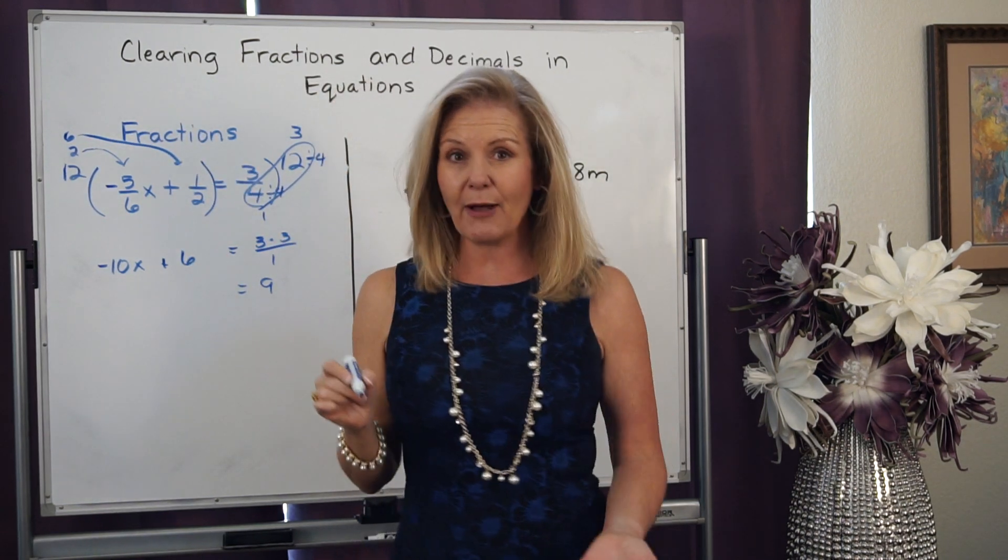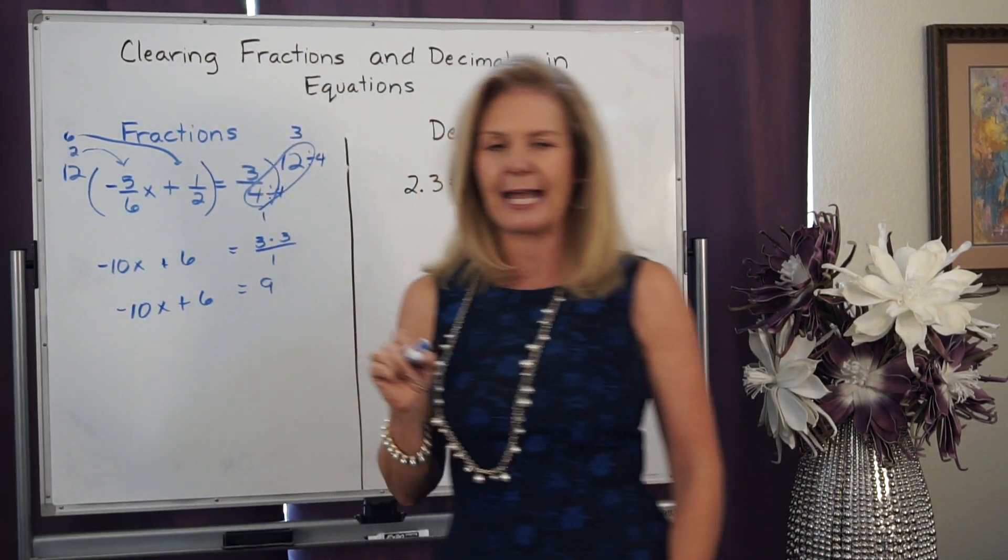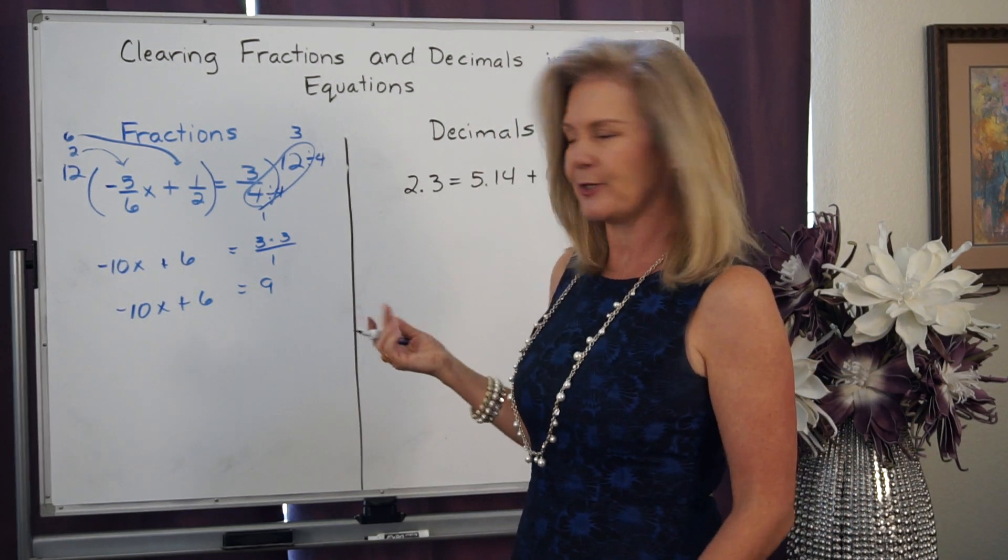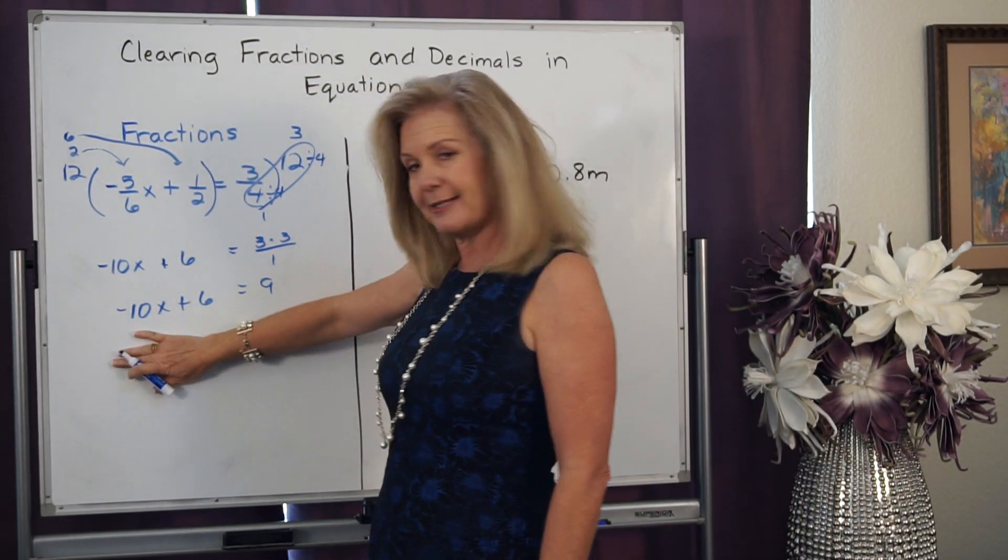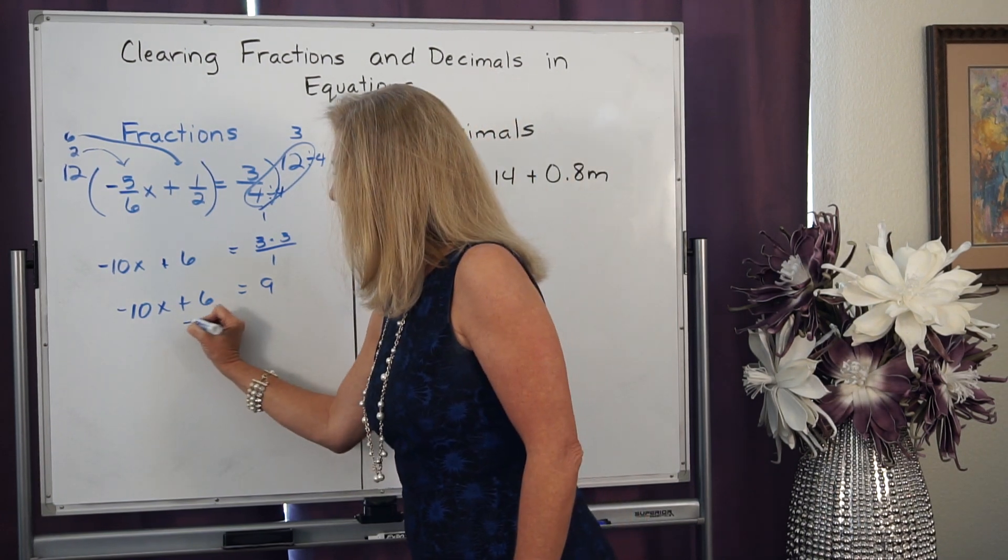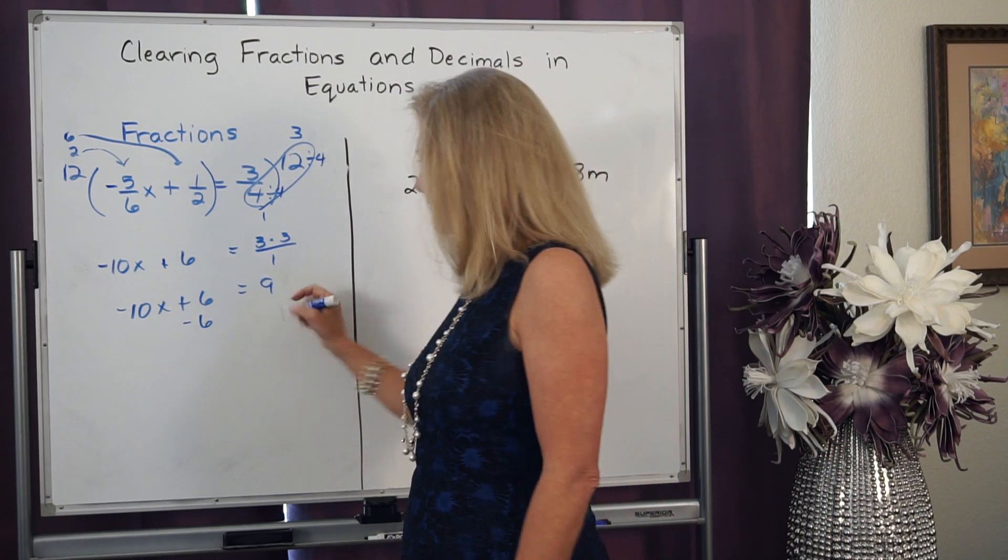So now I have a new equation. I have negative 10x plus 6 equals 9, no more fractions to work with. So now I just solve my two-step equation. I start on the side that has the variable, I need to get rid of this plus 6, I subtract 6. But whatever I do on one side, I have to do on the other.